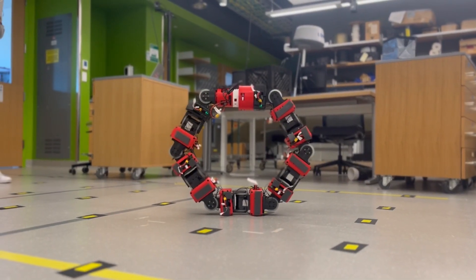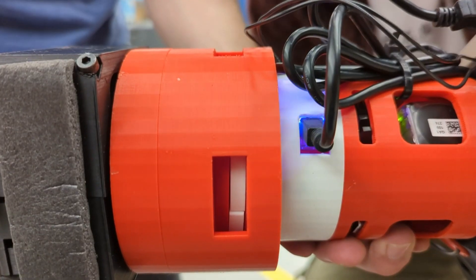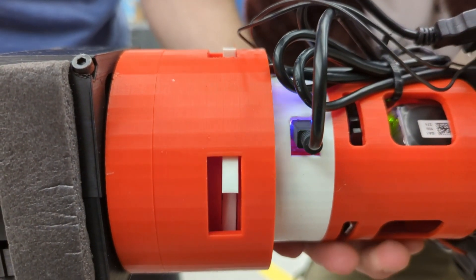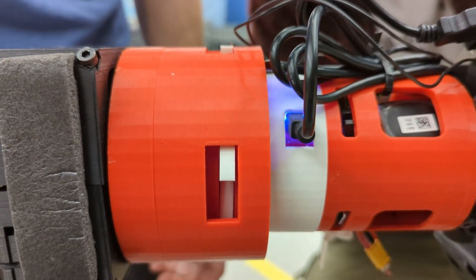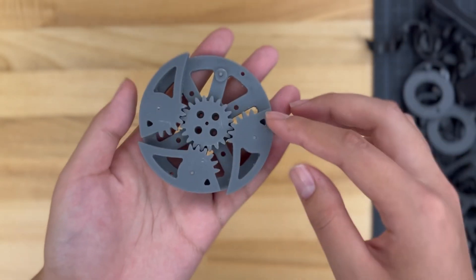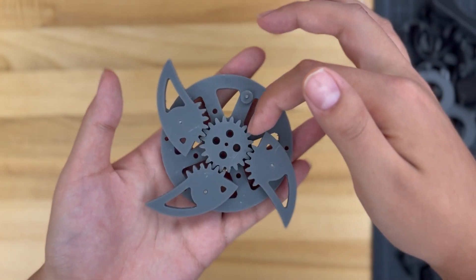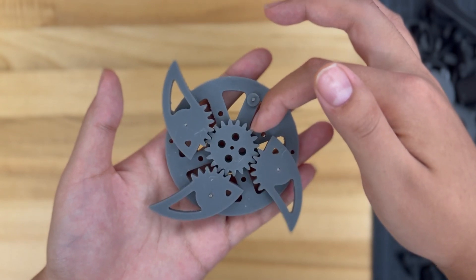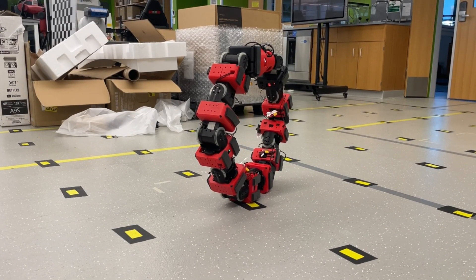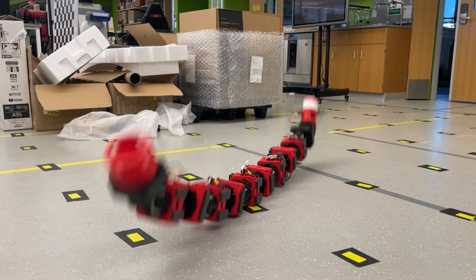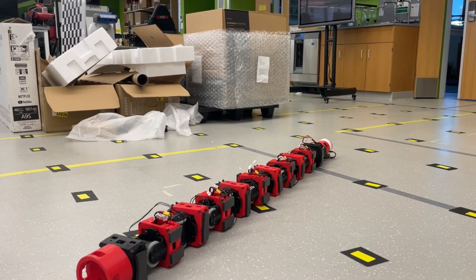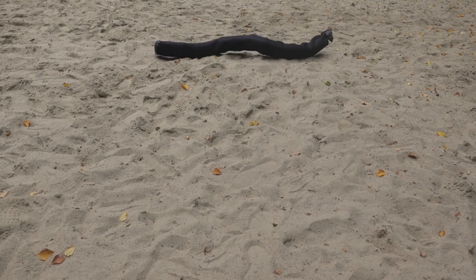Cobra's head module features an active latching mechanism that interfaces with the tail module to form a connection prior to tumbling. A small actuator within the head module drives a central gear which then rotates four latching fins, causing them to fan outward. Once tumbling is complete, the fins retract and the head and tail modules unlatch from each other.